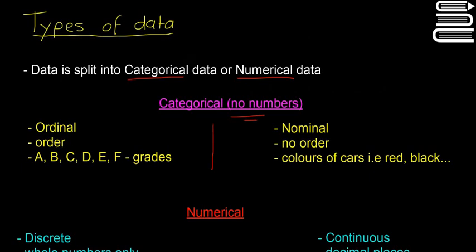So first ordinal, there's an order to it, so it's data without numbers that has an order. An example of this are your grades, so A, B, C, D, E, F. So those aren't there anymore in the Leaving Cert, you have your H1s, H2s, but you all understand how these grades work.